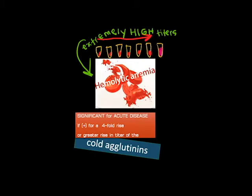Extremely high titers of cold agglutinin antibodies are sometimes found in cases of hemolytic anemia. A four-fold or greater rise in titer from paired sera — where one sample is taken early in the disease and another sample is drawn several days or a week later — is significant for acute disease.